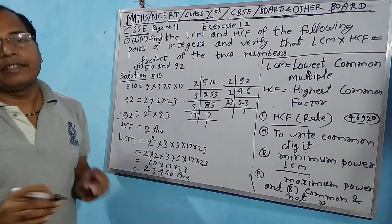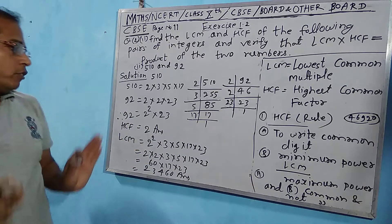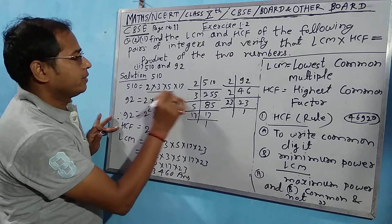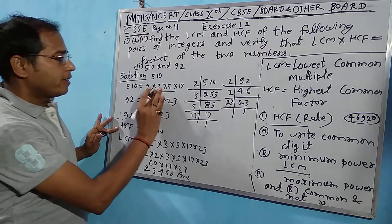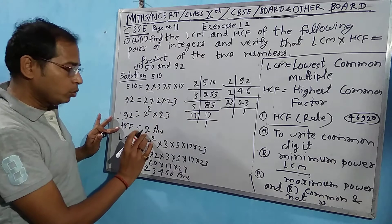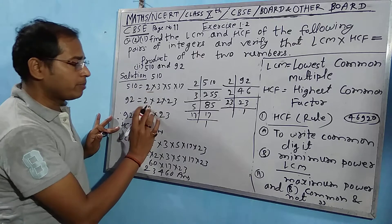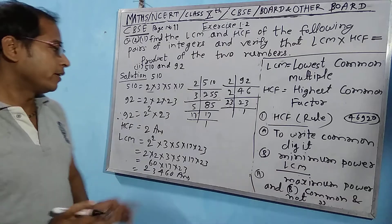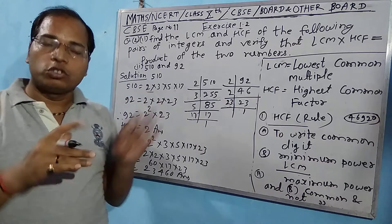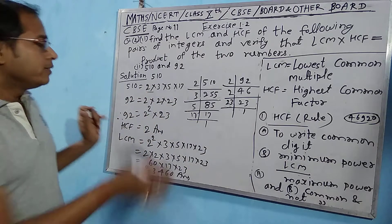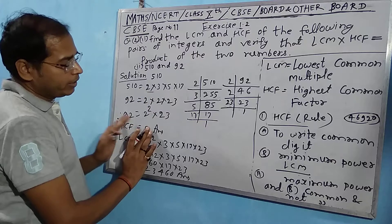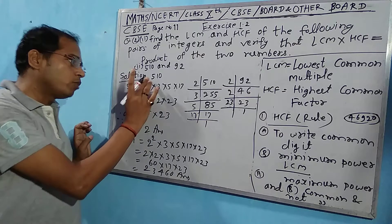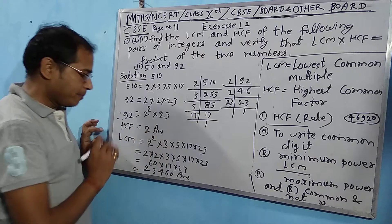Now for HCF: the rule is to write only what is common in both. Looking at 510 and 92, the factor 2 is present in both. The power of 2 in 510 is 1, and in 92 it is 2. For HCF we take the lesser power, which is 1. So HCF = 2.